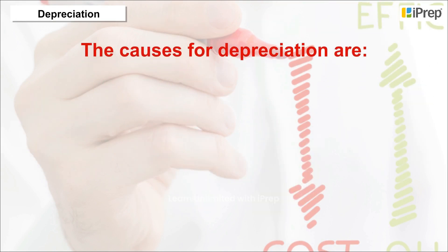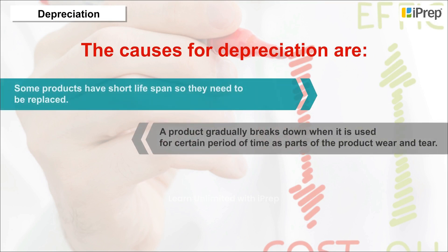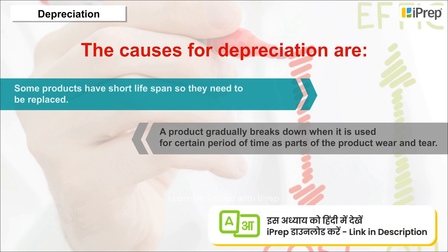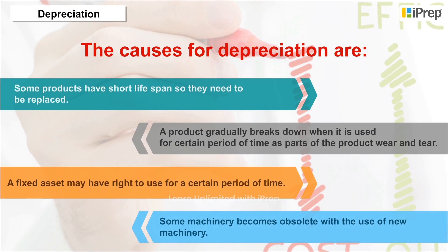The causes for depreciation are: some products have a short lifespan so they need to be replaced; a product gradually breaks down when it is used for a certain period of time as parts of the product wear and tear; a fixed asset may have the right to use for a certain period of time; and some machinery becomes obsolete with the use of new machinery.